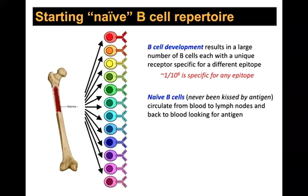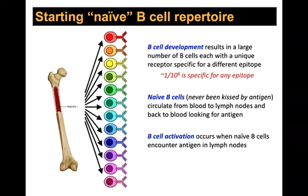Naive B cells have never recognized their antigen. They continually circulate from the blood to the lymph nodes where they look for antigen, then drain upstream to the thoracic duct and re-enter the blood. They spend about 90% or more of their time in the lymph nodes looking for antigen, and very little time in the blood. B cell activation occurs when these naive B cells encounter antigen in the lymph nodes.